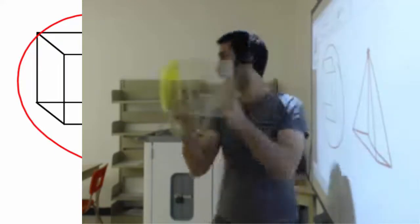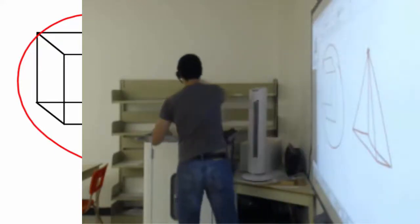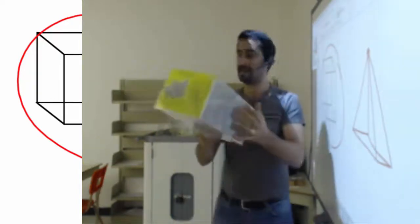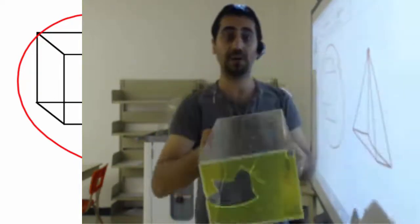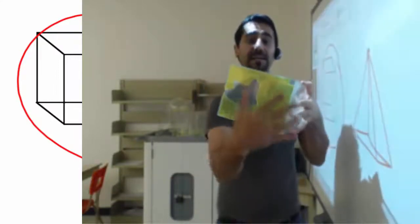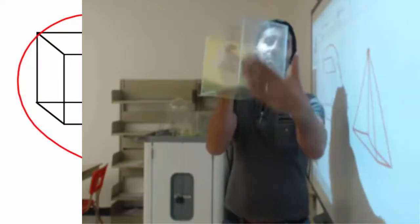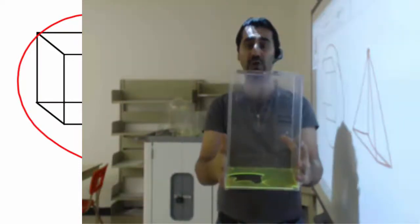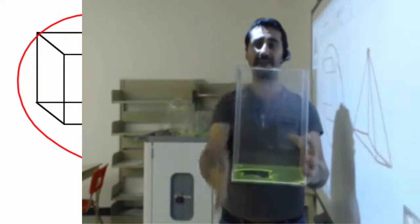Here is another one. I have rectangles. This is a rectangle. The base area is a rectangle and on the top you also have a rectangle, and the sides go up straight with 90 degrees. Yes, this is also a prism.